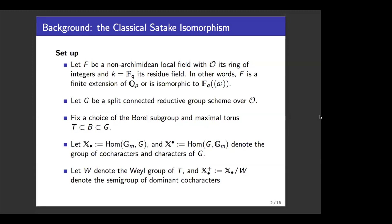We assume G to be a split connected reductive scheme over the ring of integers, and then we fix the choice of the Borel subgroup and the maximal torus inside G. We write X_{•} and X^{•} for the group of co-characters and the characters of G. As usual, we use W to denote the Weyl group of T and X^{•,+} to denote the semi-group of the dominant co-characters.